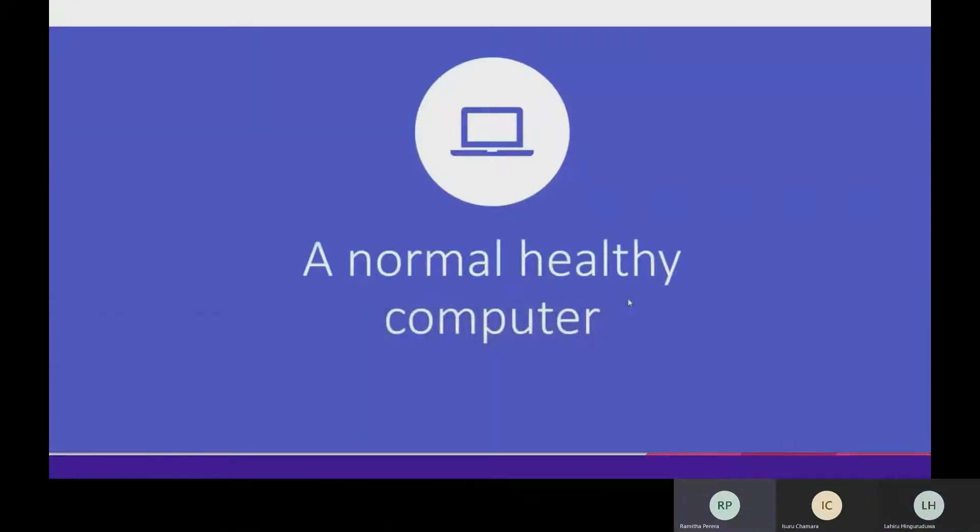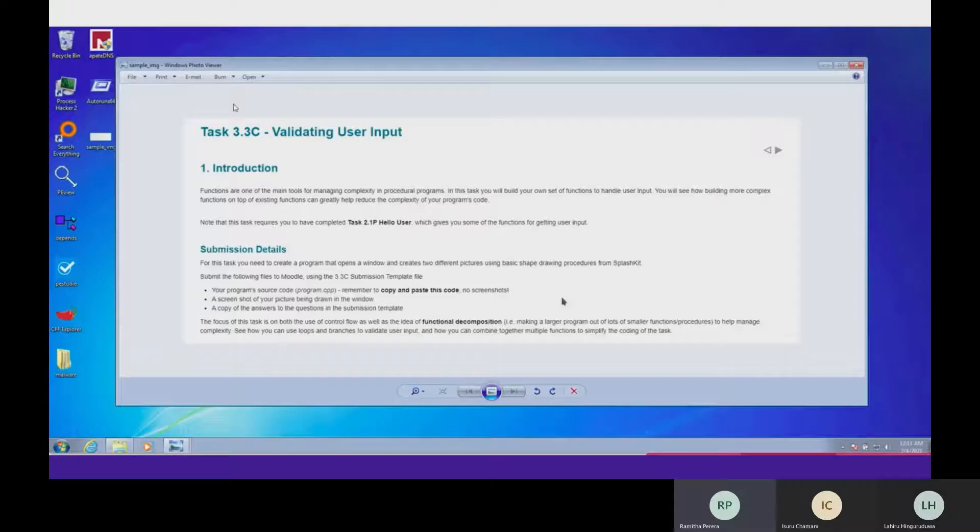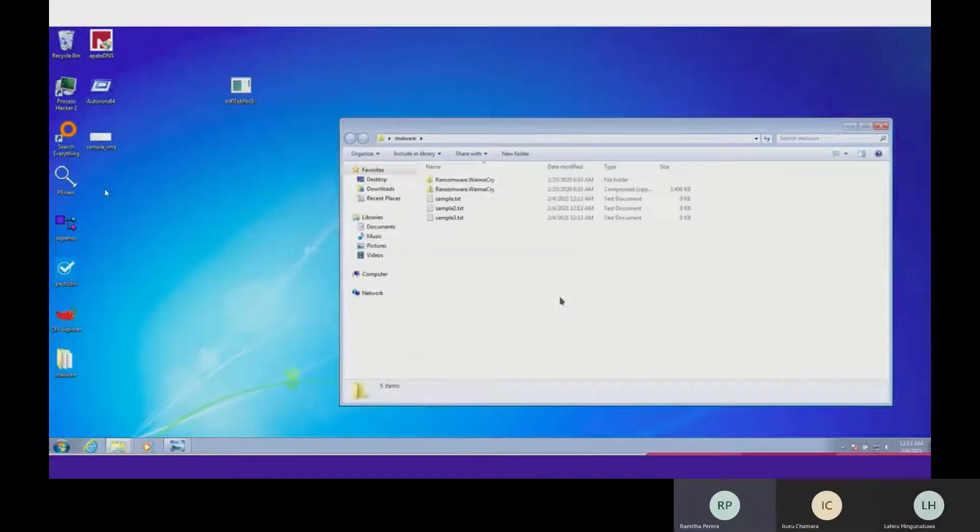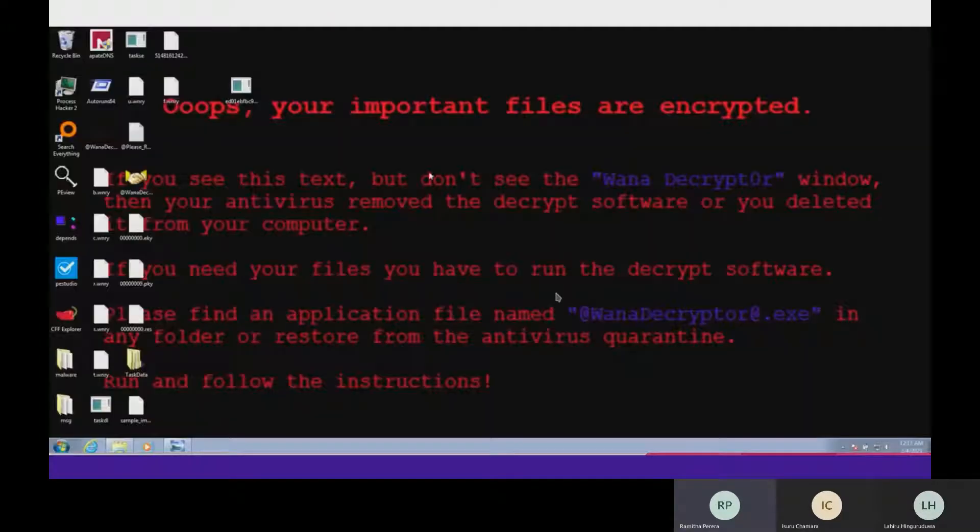Let me demonstrate a normal computer system. See, everything is cool and calm, programs are working, you can open the files and all sorts. This is prior to the ransomware attack. Then suddenly a ransomware attack occurs, in this case it's the WannaCry attack.